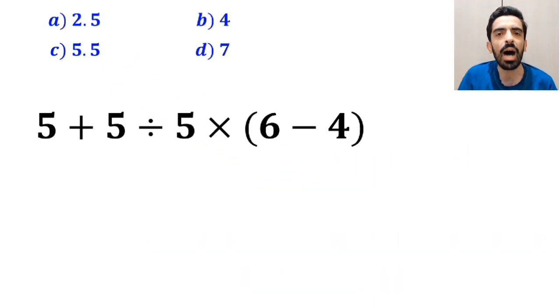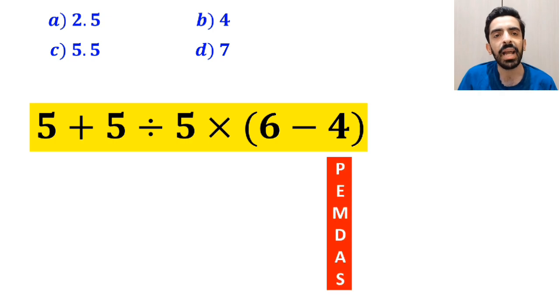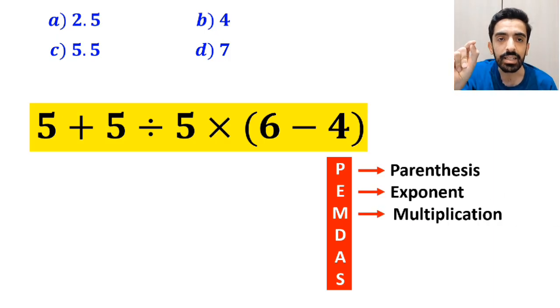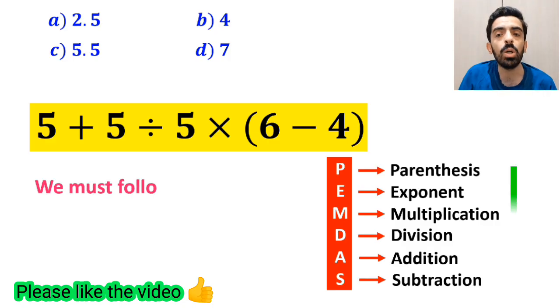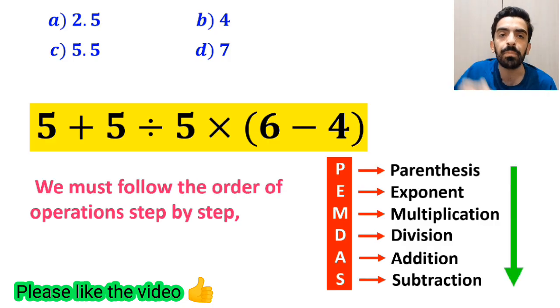Now, let me show you how to solve this expression properly. To solve this problem, we must follow the PEMDAS rule. This rule: P stands for parenthesis, E stands for exponent, M stands for multiplication, D stands for division, A stands for addition, and S stands for subtraction. We must follow the order of operations step by step from top to bottom.